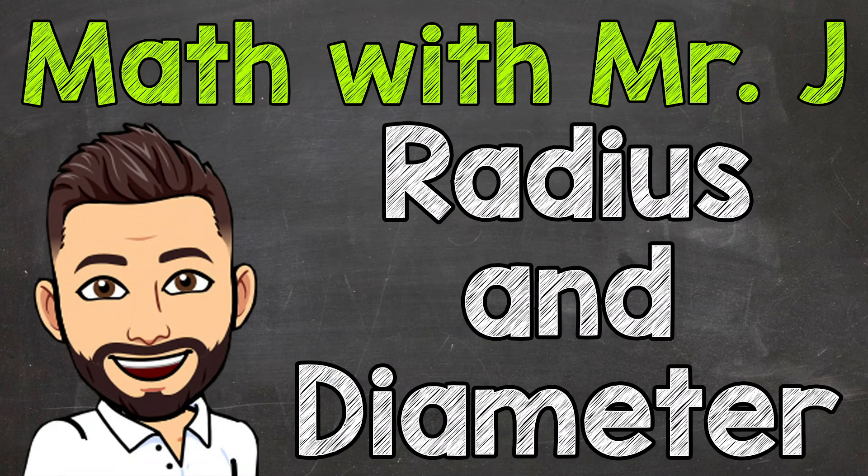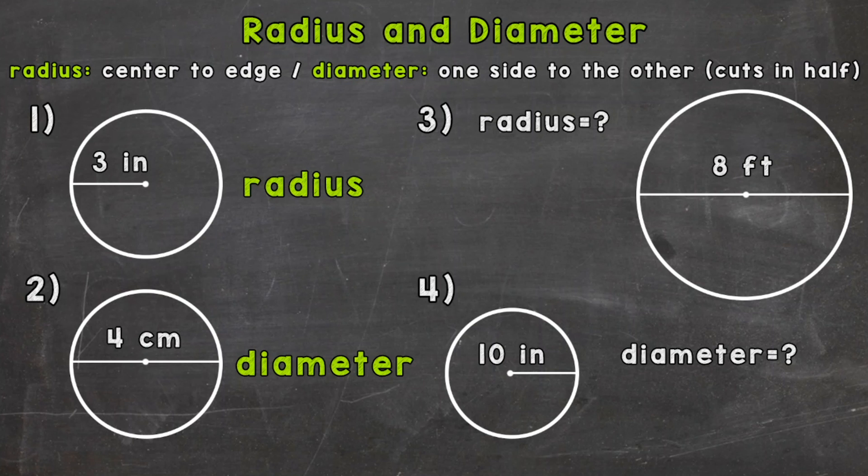Welcome to Math with Mr. J. In this video we are going to be discussing circles, and specifically radius and diameter. As you can see, there are four numbers on your screen. Numbers one and two we're going to discuss what radius and diameter are. On the right, we're going to talk about how to find radius if we're given a diameter, or vice versa, how to find diameter if we're given a radius.